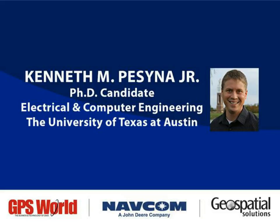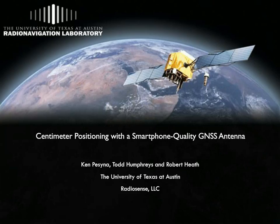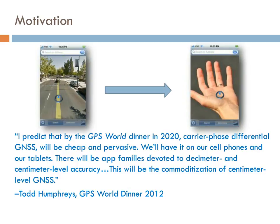Hi, my name is Ken Pesina, and I'm a PhD candidate at the University of Texas at Austin. The work I'm going to present today was performed in collaboration with Dr. Todd Humphries and Dr. Robert Heath. Two years ago in 2012 at the ION GNSS Plus Conference, the director of our radio navigation lab, Todd Humphries, predicted that centimeter-level GNSS would make its way into smartphones by 2020. For the past year and a half, we've been working with a smartphone manufacturer to try to bring this about, and what I present today is a summary of everything we've learned over the past year.